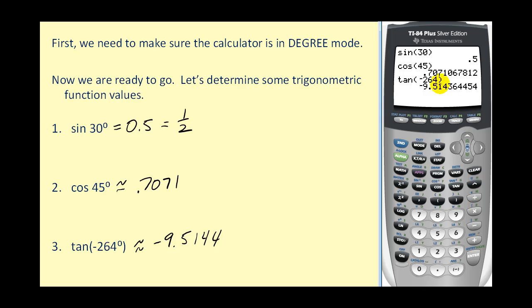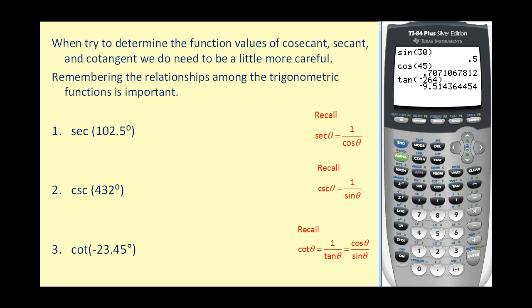This seems like a very straightforward process. However, when we consider the function values of cosecant, secant, and cotangent, we do need to be a little more careful. Remembering the relationships among the trigonometric functions is important.